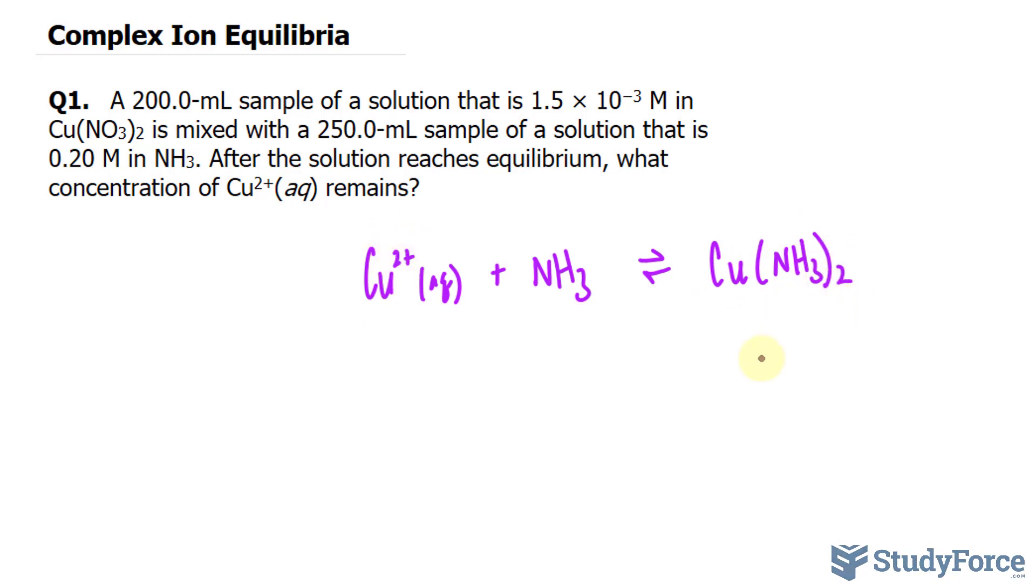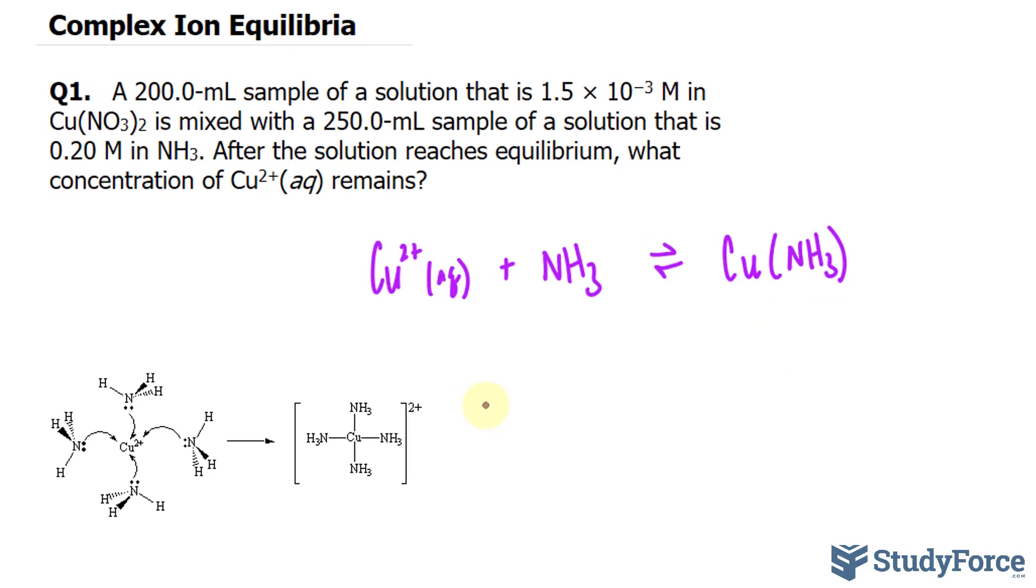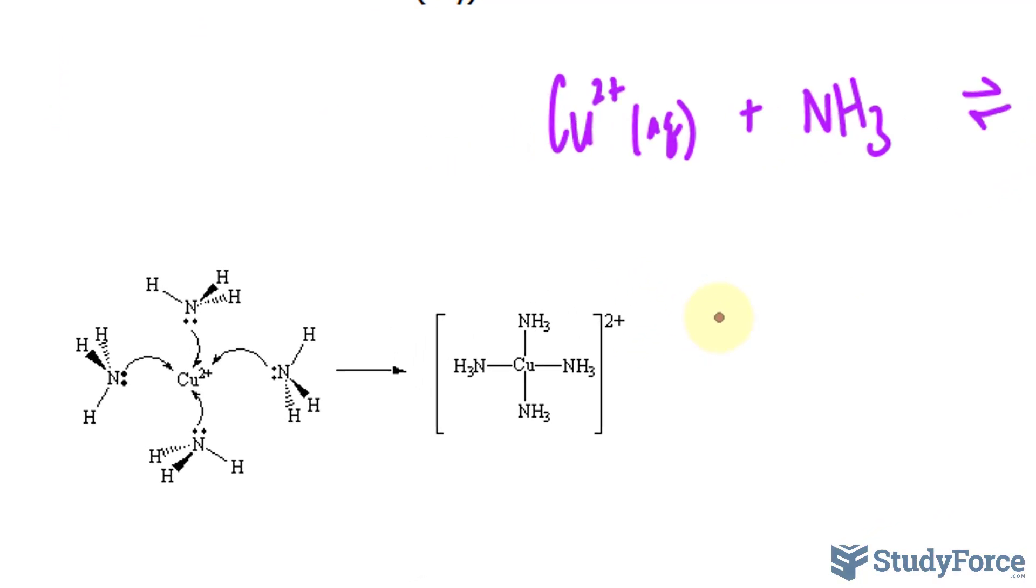Because generally the superscript becomes the subscript of the other molecule and vice versa. But that's not the case. In fact, if you look at the illustration, Cu2+ needs four molecules of ammonia to be satisfied in a chemical reaction.